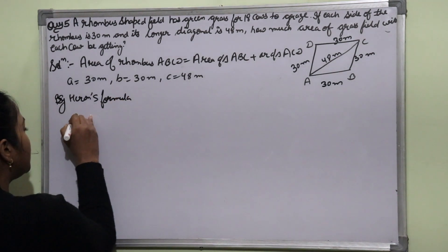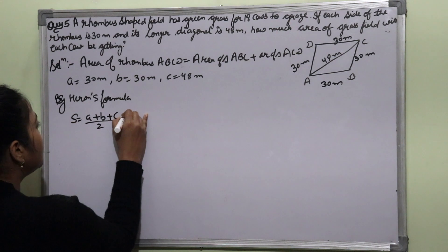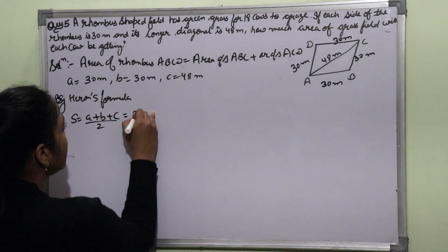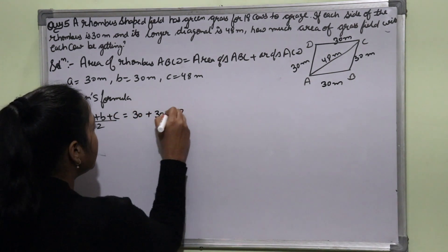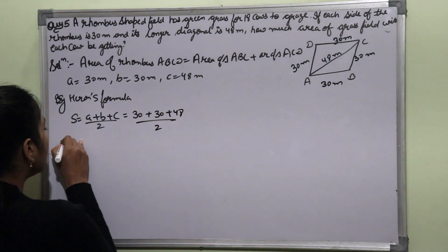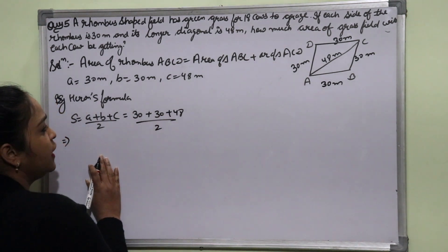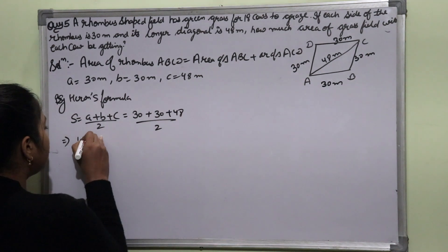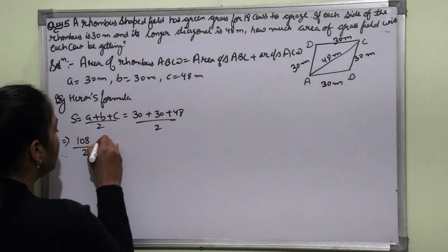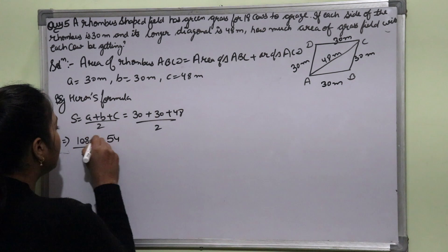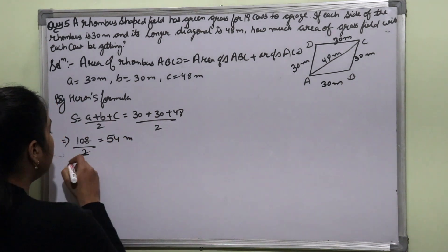S = (A + B + C) / 2, that is (30 + 30 + 48) / 2. Adding: 60 + 48 = 108, divided by 2 gives S = 54 meters.